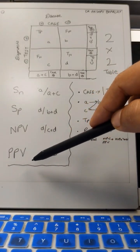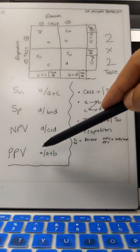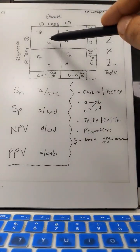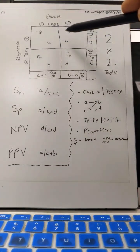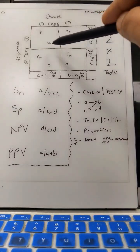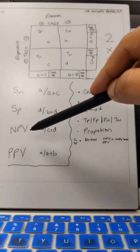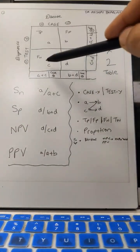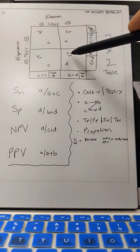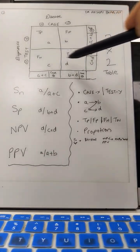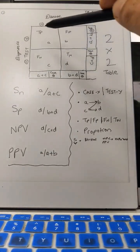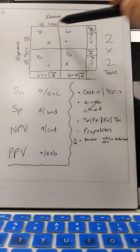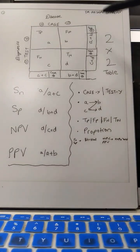Whereas positive predictive value tells us about the proportion of people who genuinely have the disease out of all the people who have been tested positive. Hence negative predictive value is d upon c plus d, meaning true negative out of all the people tested negative, and positive predictive value is true positive out of all the people who have been tested positive.